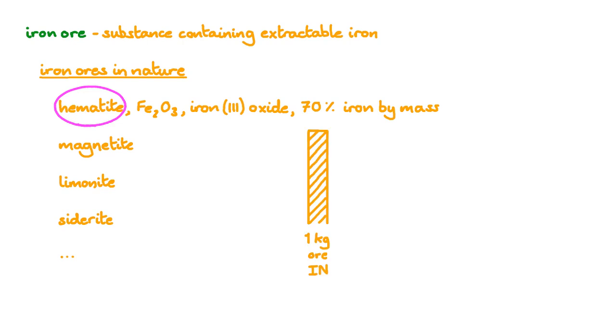What this means is that with perfect extraction, putting 1 kilogram of ore in, we should get 0.7 kilograms or 700 grams of pure iron out. However, it's not quite that simple, so let's look at the details.